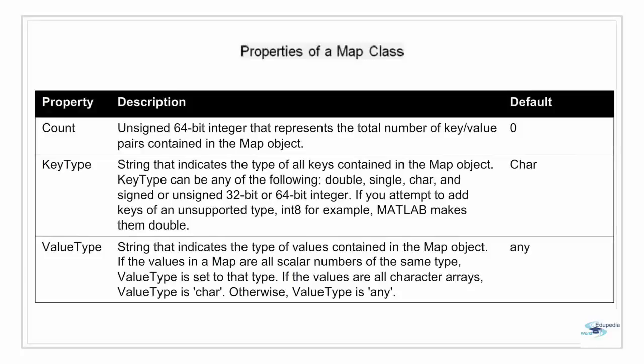Properties of a map class: a map is basically an object or an instance of a MATLAB class called map. It is also a handle object and will behave like any other MATLAB handle object. All objects of map have three properties. First is Count — an unsigned integer that represents the total number of key-value pairs present in the map object. By default this value is zero.